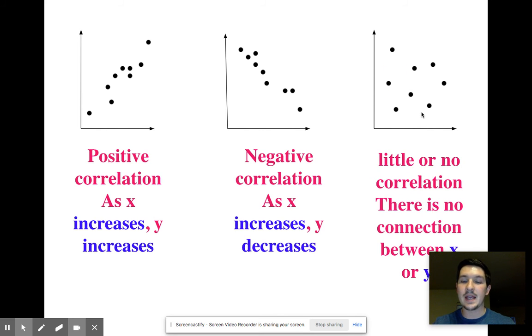And then this one here, of course, as our points are just kind of scattered everywhere, we have a little-to-no correlated scatterplot, which means there's no connection between your two categories, there's no connection between your x or your y.